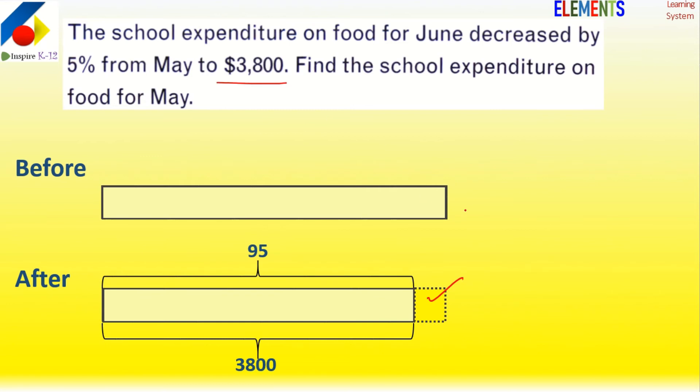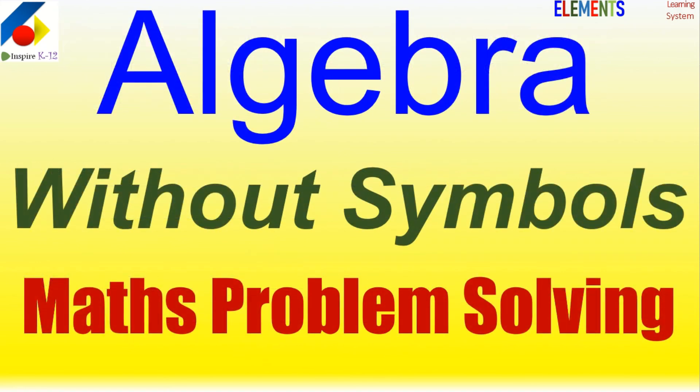...is $3,800. So we have to make one unit for the first step, and we can change the unit. That was it.